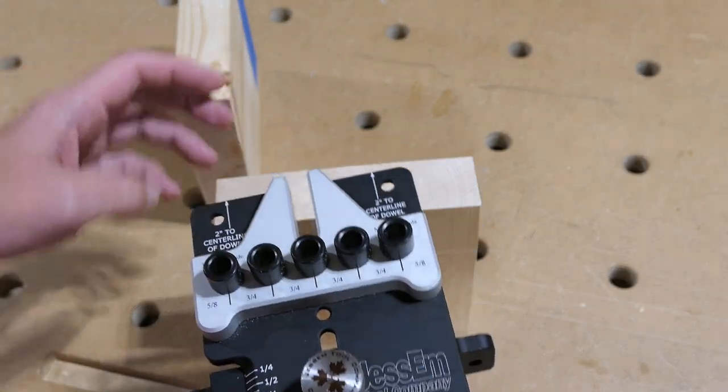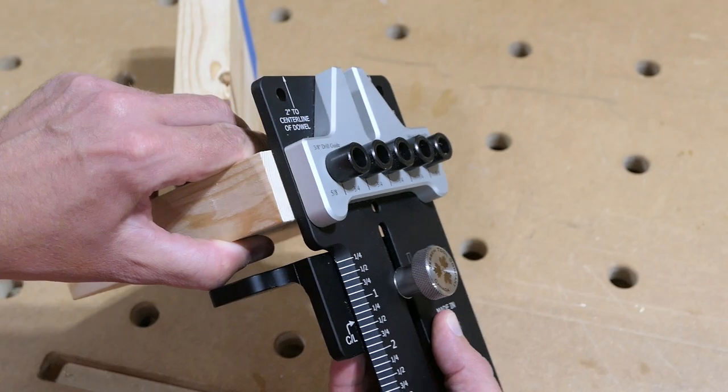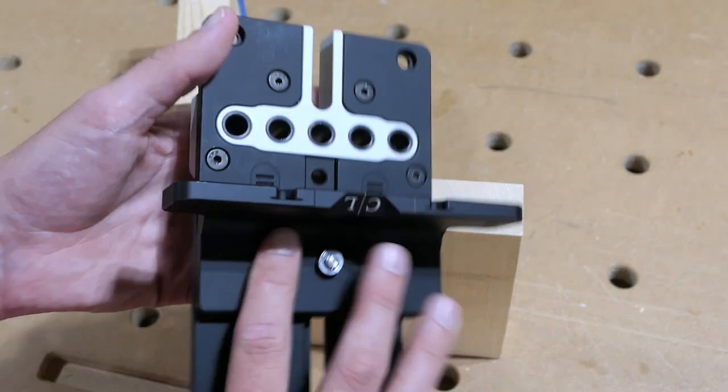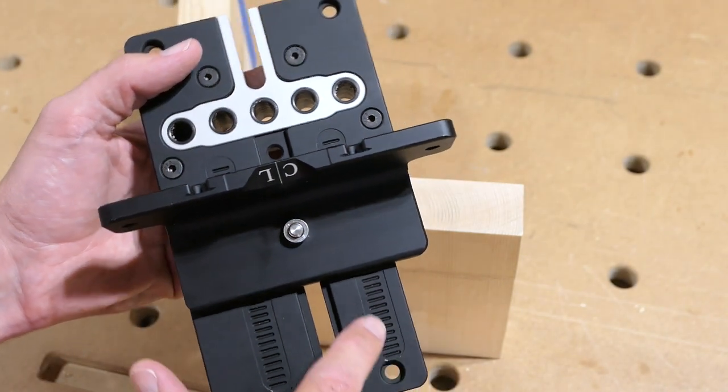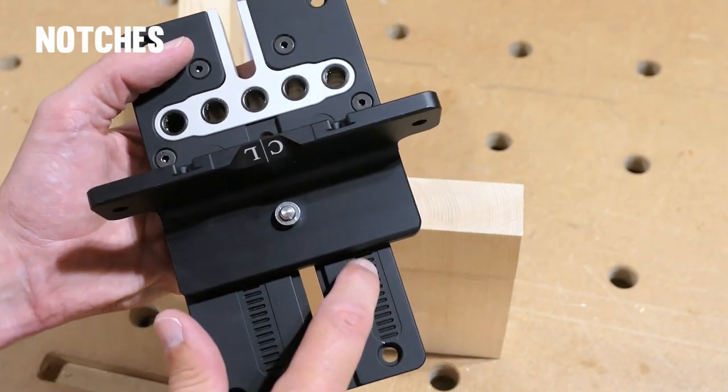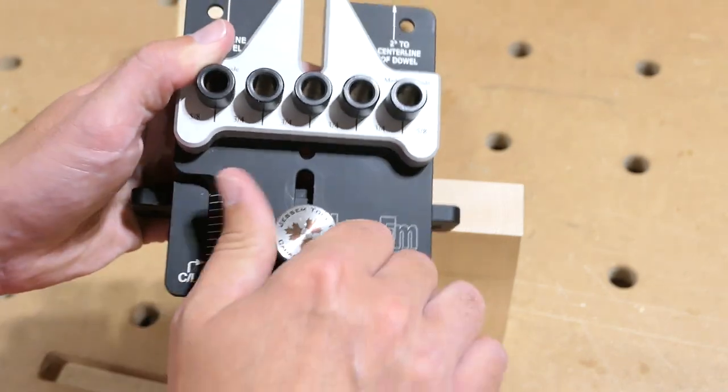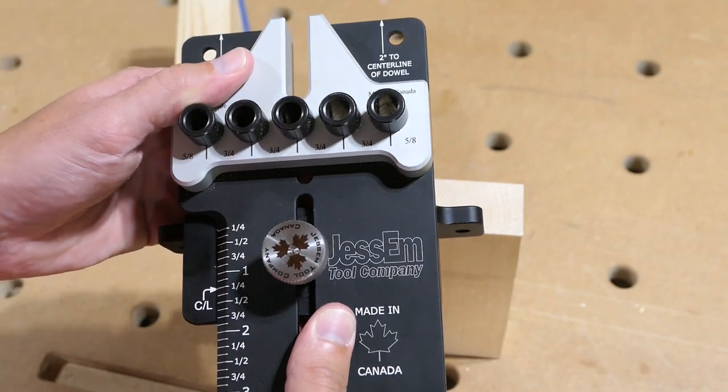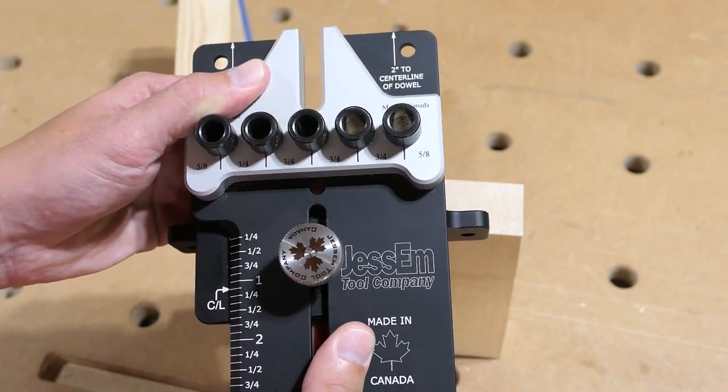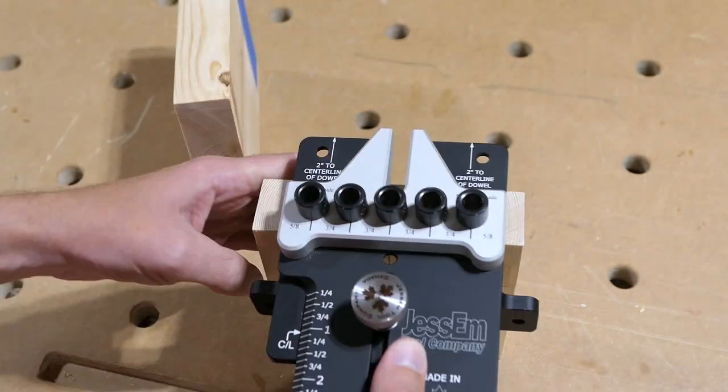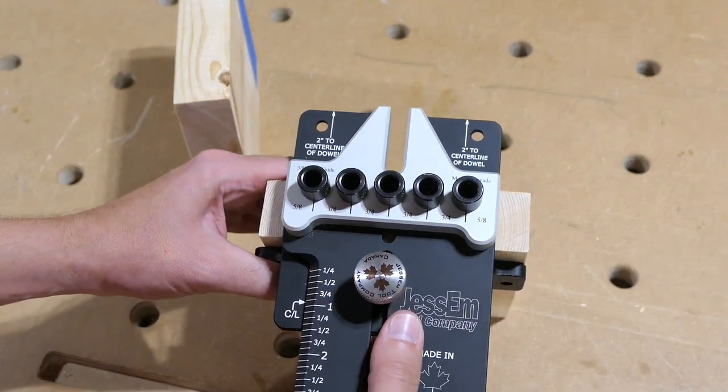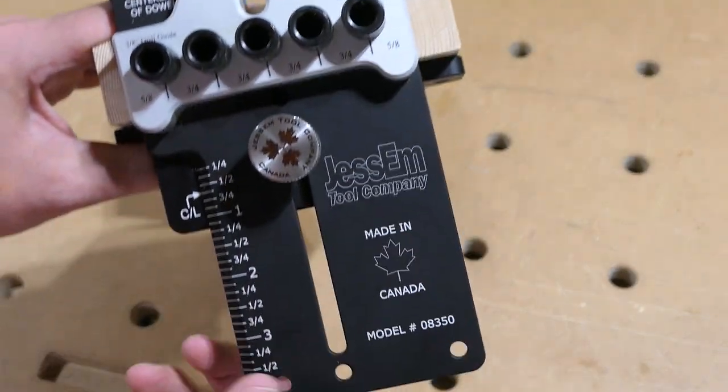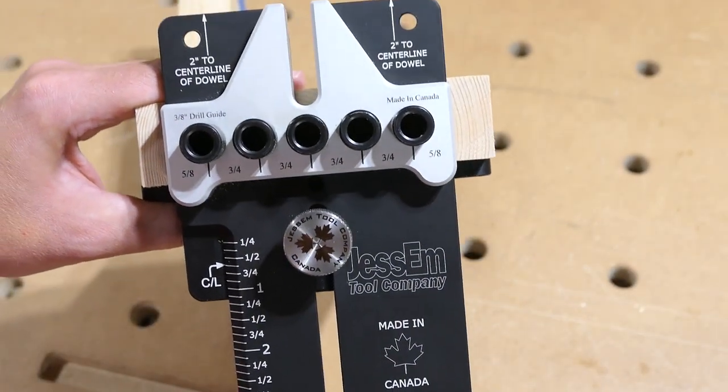Before we drill the holes we have to establish their position. On the back of the jig there's a little index mark, so that every time you move it, it locks in one of those grooves. In our case, five-eighths seems about right.